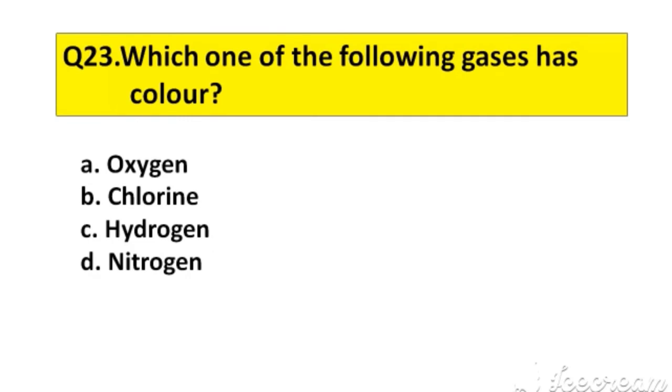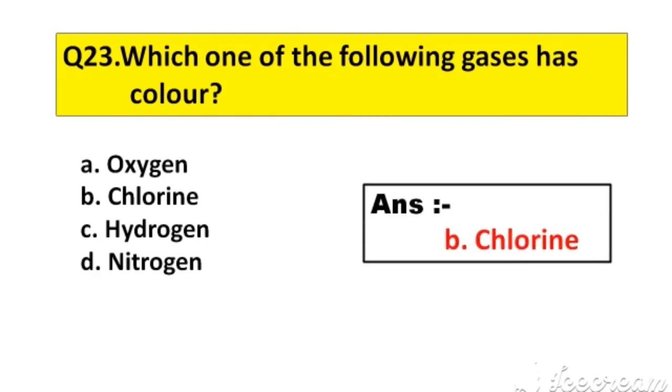Question number 23. Which one of the following gases has color? A. Oxygen, B. Chlorine, C. Hydrogen, D. Nitrogen. The right answer is option B, Chlorine.